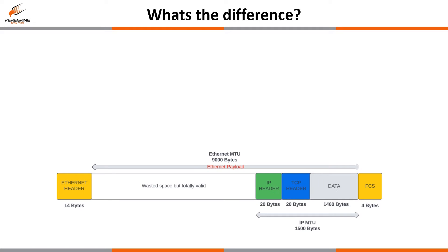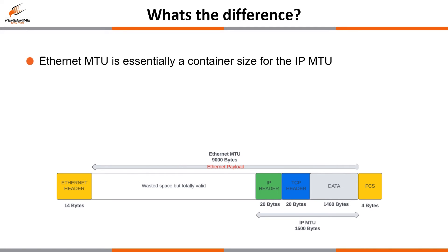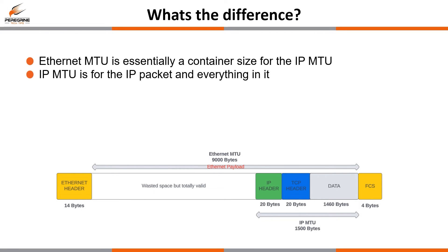When first learning these two concepts it can sometimes be difficult to work out the main differences, seeing as both by default are 1500 bytes and look quite similar. The Ethernet MTU should be seen essentially like a container for the IP MTU. The IP MTU is for the IP packet specifically, and having the ability to change it independently of the Ethernet MTU gives us more granular control. For example, you could have an Ethernet MTU using jumbo frames of 9000 bytes and an IP MTU of 1500 bytes. Anything which is not IP being encapsulated within Ethernet could still make use of those 9000 bytes, but IP would not.